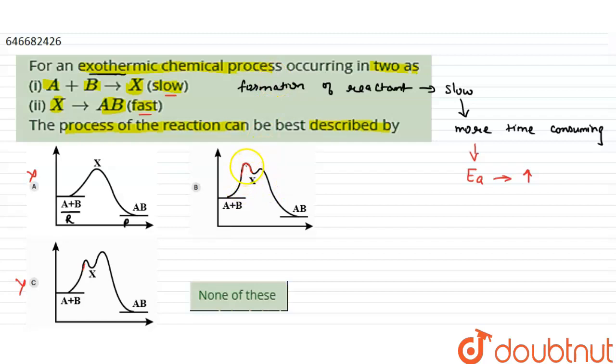Higher because as we know, this is known as the activation energy, that is EA. So for first peak, this is higher. And now in second step, the decomposition of X gives AB. This is a fast step.